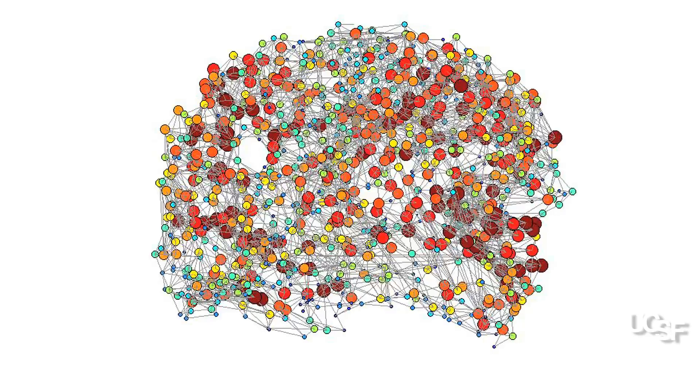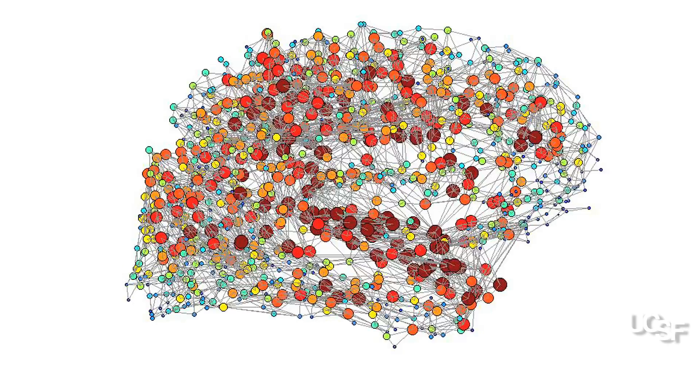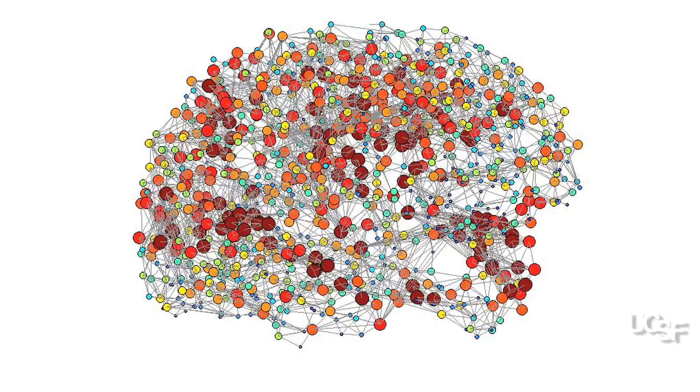The larger and redder circles represent the hubs of the whole brain network, the regions with the greatest number of connections to other regions.